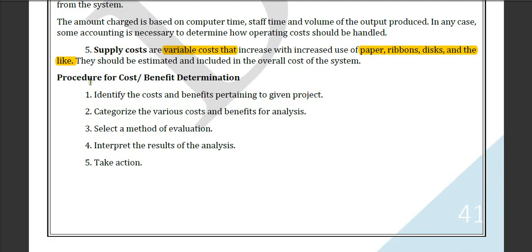The procedure for cost and benefit determination is: first, identify the cost and benefit; second, categorize the variation; third, select an evaluation method; and finally, interpret the results and analysis, and take action on that cost.